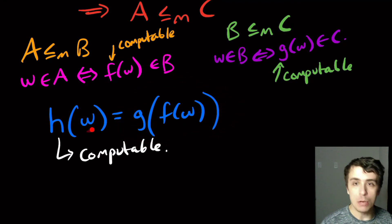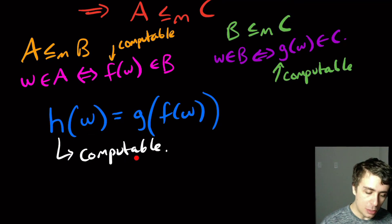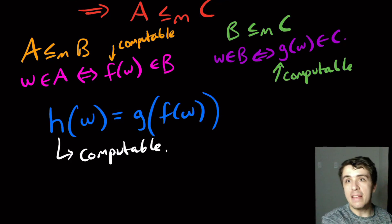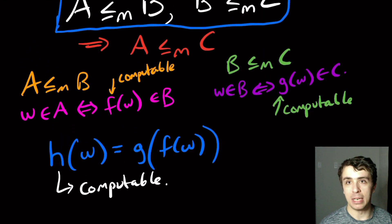if and only if W was in A before. And so therefore, this function right here is not only computable, but it actually goes, the inputs of A are there if and only if the result is in C, which is what a mapping reduction actually is.